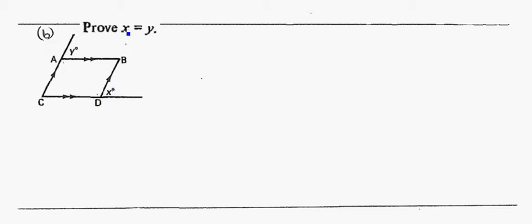So another proof here. We're looking at x is equal to y. Looking at what I've been given here, I notice I actually have a parallelogram. Two parallel lines, two sets of parallel lines on a four-sided shape.